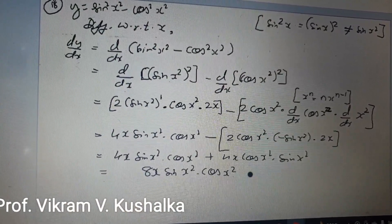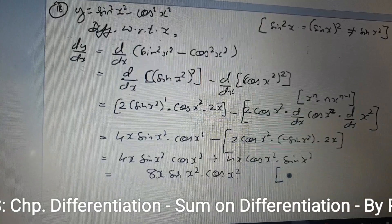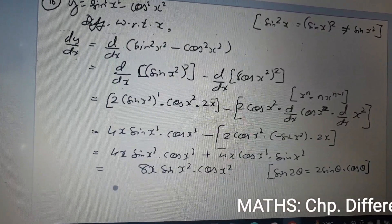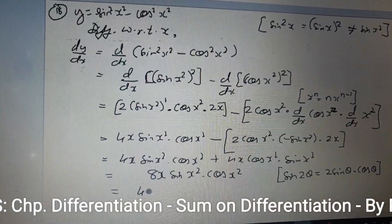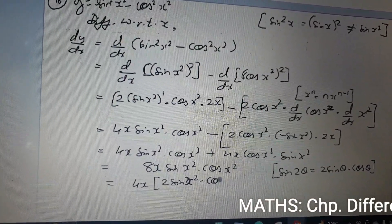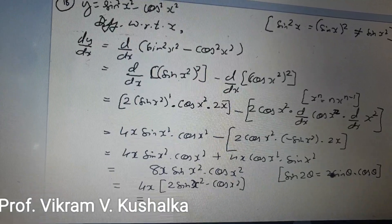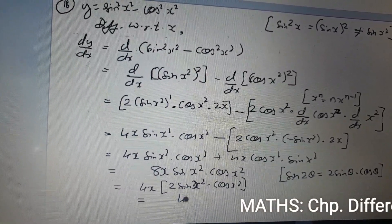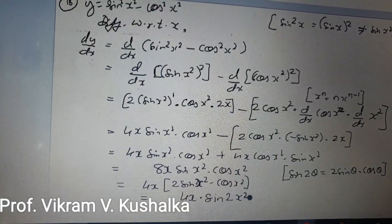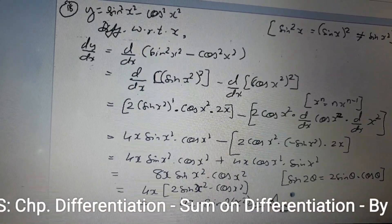Now we check if we can simplify further. There is a trigonometric identity: sin 2θ = 2 sin θ cos θ. Taking 4x outside, inside we have 2·sin x²·cos x², which matches the 2 sin θ cos θ format. This equals sin 2θ, so with θ = x², the final answer is dy/dx = 4x·sin(2x²).